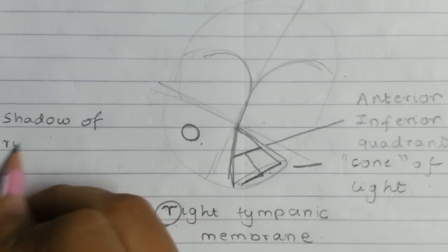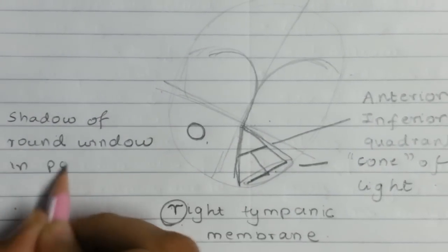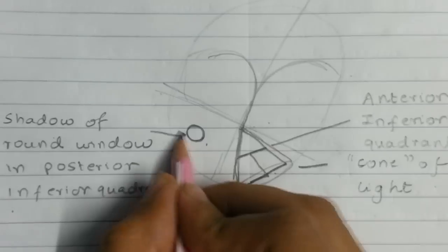In the posterior inferior quadrant we draw a circle which represents the shadow of the round window.